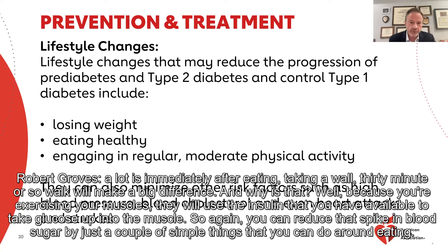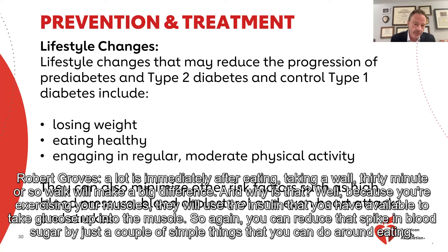The other thing that helps a lot is immediately after eating, taking a walk. A 30-minute or so walk will make a big difference. Why? Because you're exercising your muscles — they will use the insulin that you have available to take glucose up into the muscle. So again, you can reduce that spike in blood sugar by just a couple of simple things that you can do around eating.